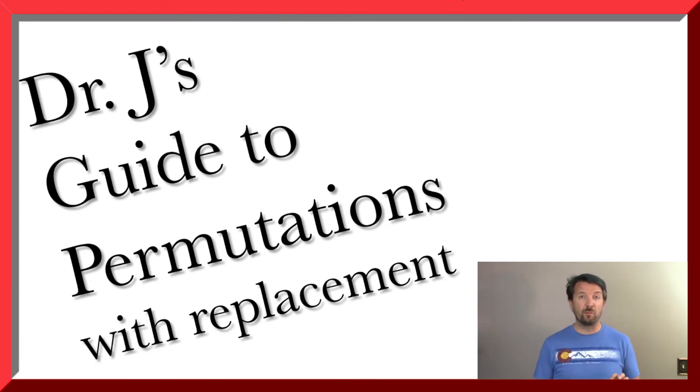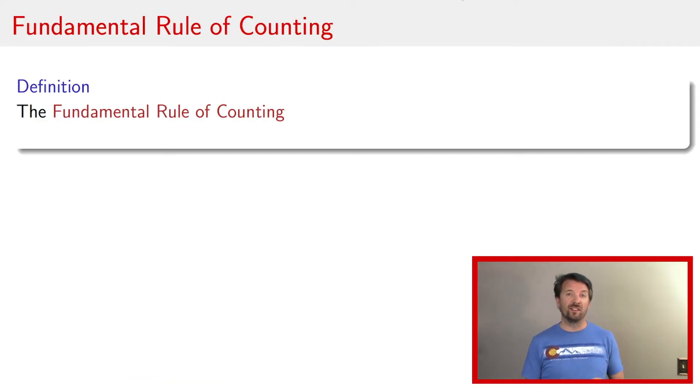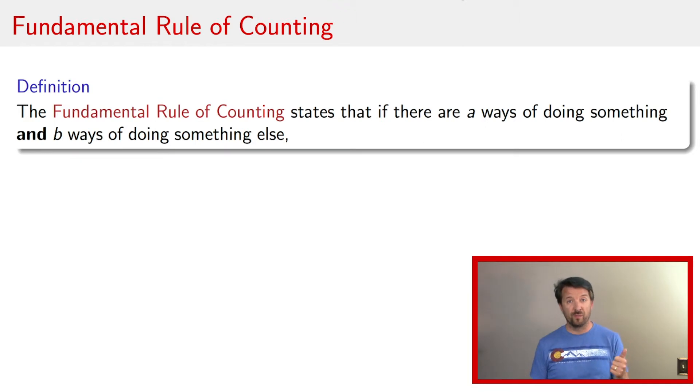In order to get the intuition behind the formula, we're going to introduce something called the fundamental rule of counting. The fundamental rule of counting says that if there are A ways of doing one thing and B ways of doing another thing, then there are A times B ways of doing the first thing and the second thing.